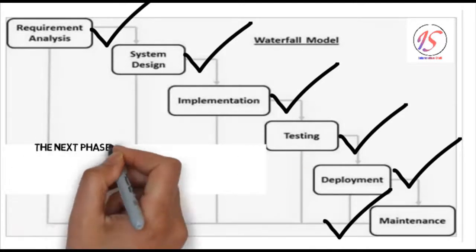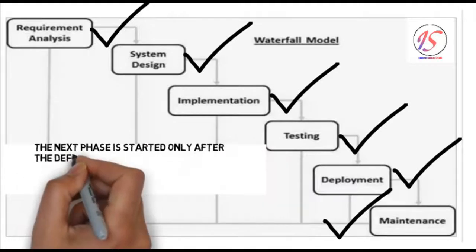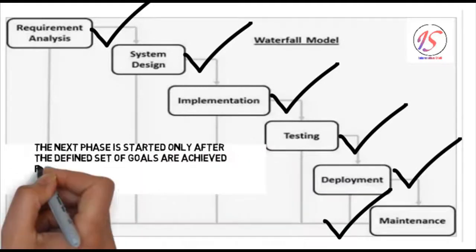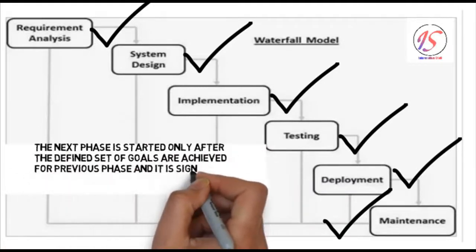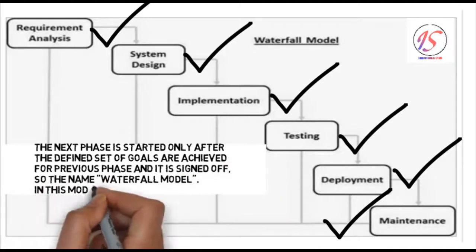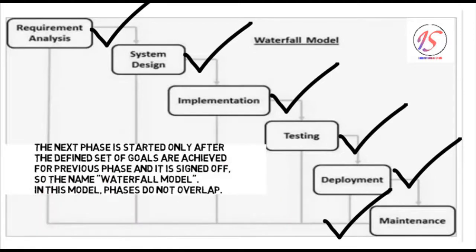Through the phases, the next phase is started only after a defined set of goals are achieved for the previous phase and it is signed off. So the name Waterfall model. In this model, phases do not overlap.